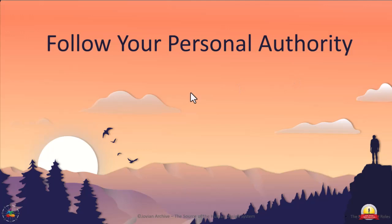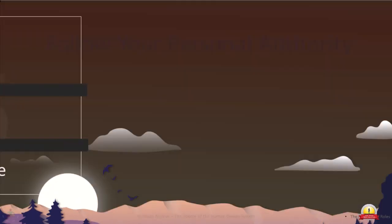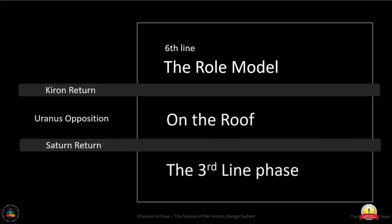So for those role models going back to the role models that are out there, lost in transference, that suffer the pain of role models when he sees them — when they can't get rid of the third-line pessimism, that first 30 years, Saturn return — they drag that pessimism onto the roof rather than being aloof, rather than developing their role of attunement to that objective nature.